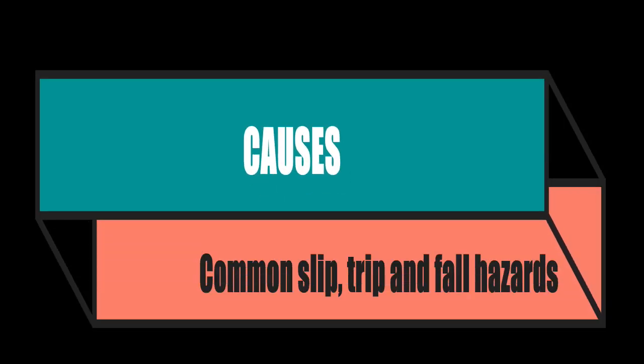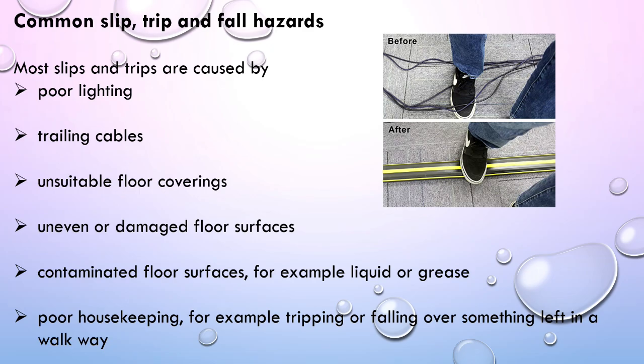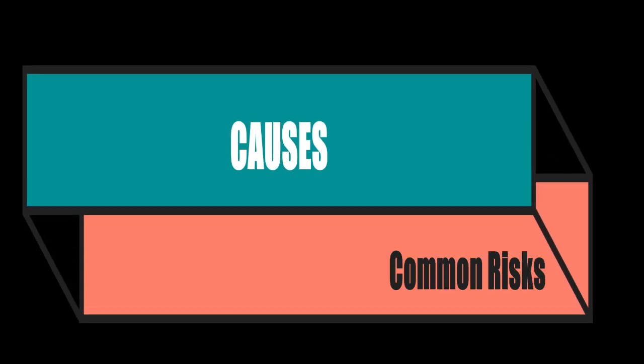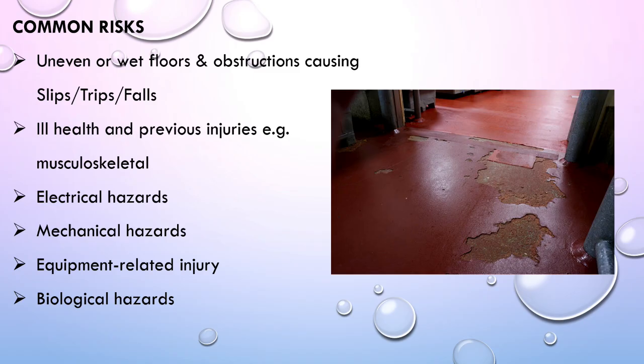Common slip, trip and fall hazards include poor lighting, trailing cables, unsuitable floor coverings, uneven or damaged floor surfaces, contaminated floor surfaces such as liquid or grease, and poor housekeeping — for example, tripping or falling over something left in a walkway. Common risks also include uneven floors and obstructions.